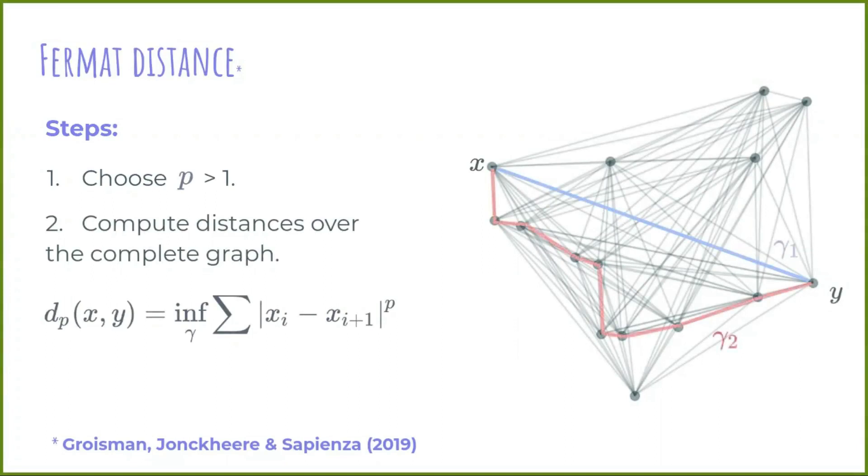And then, compute the length of each path as the sum of the Euclidean distance to the power p of consecutive points. Finally, pick the shortest path. For instance, for a value of p equal to 2, one can see that the path gamma 2 is shorter than the path gamma 1 in the Fermat sense.